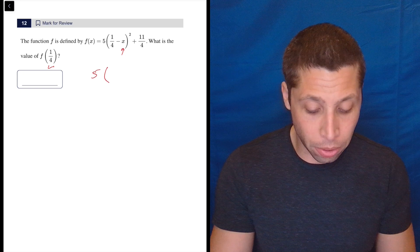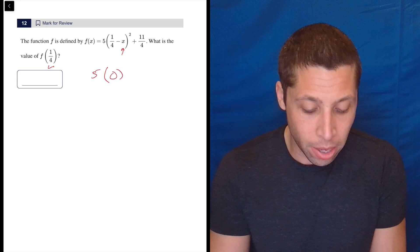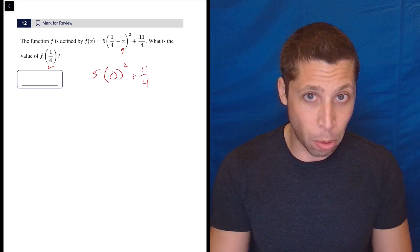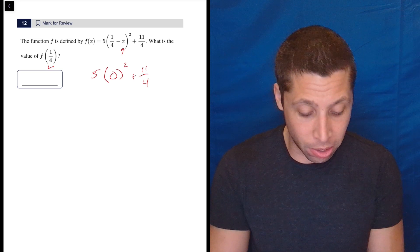First and foremost, one-fourth minus one-fourth is zero. That's why this isn't as bad as it looks, because if we square zero, we get zero, and if we multiply five by zero, we get zero.